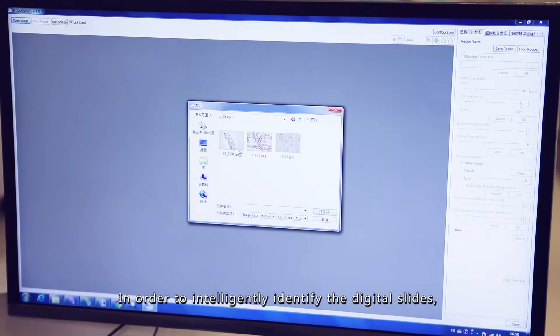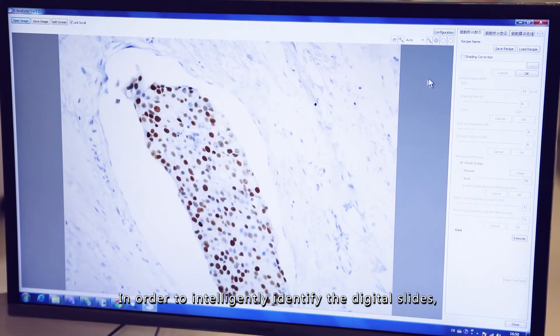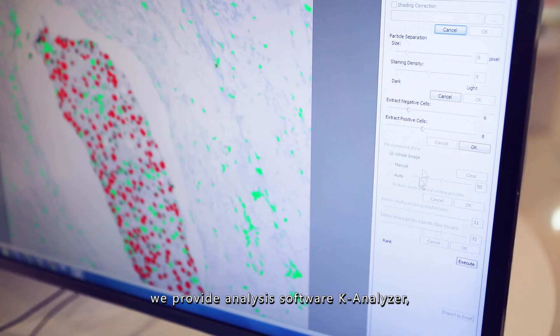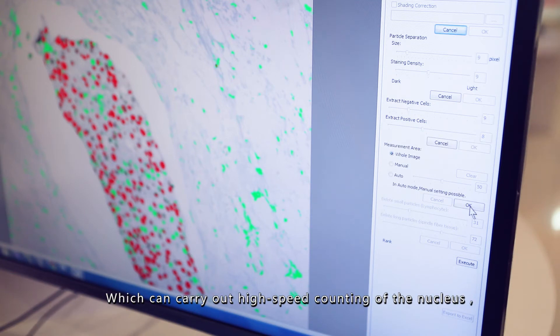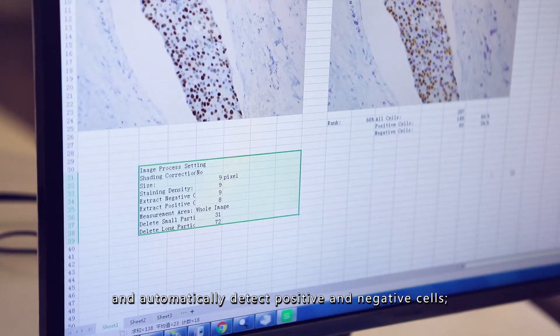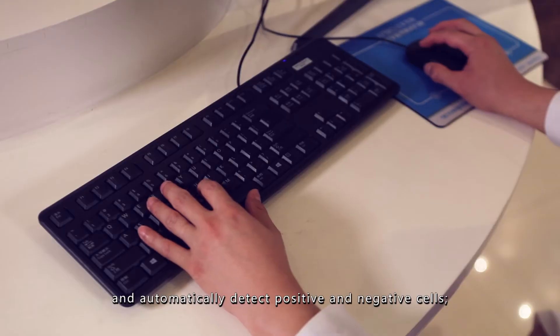In order to intelligently identify the digital slides, we provide analysis software K-Analyzer, which can carry out high-speed counting of the nucleus, and automatically detect positive and negative cells.